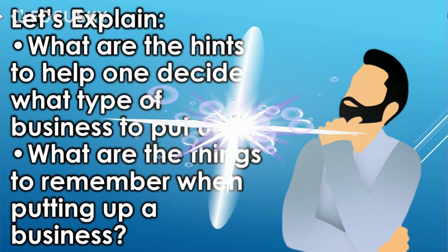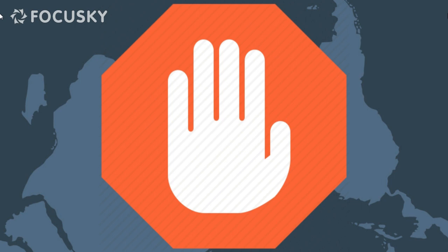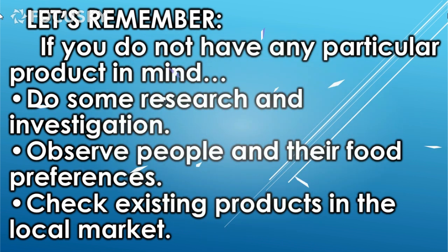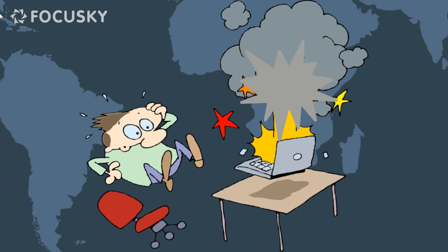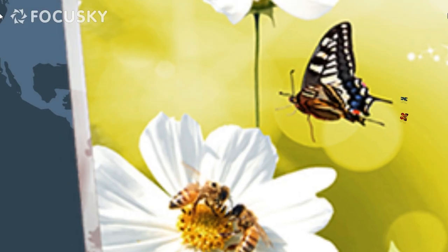Let's explain: what are the hints to help one decide what type of business to put up? What are the things to remember when putting up a business? Let's remember — if you do not have any particular product in mind, do some research and investigation, observe people and their food preferences, and check existing products in the local market.